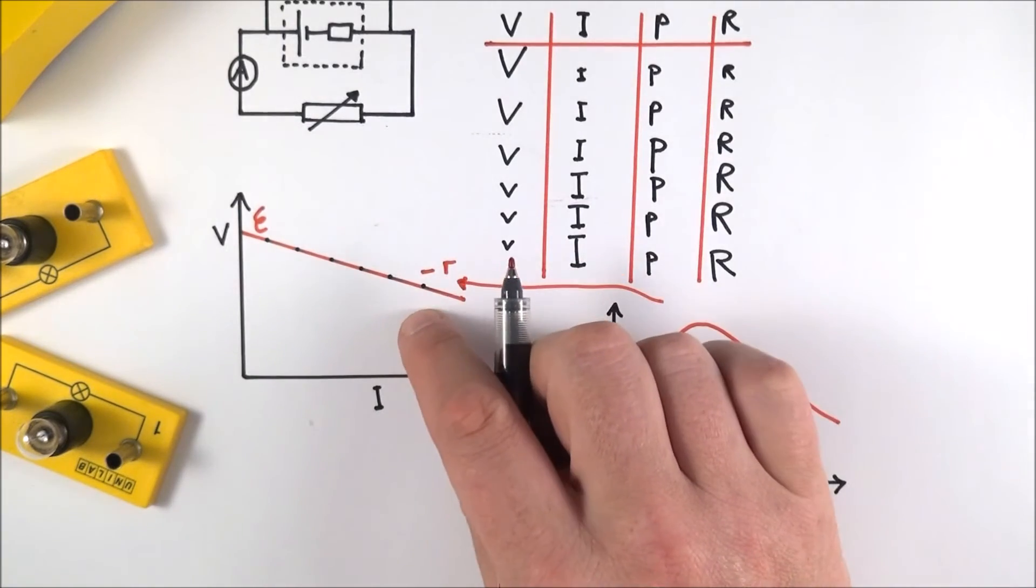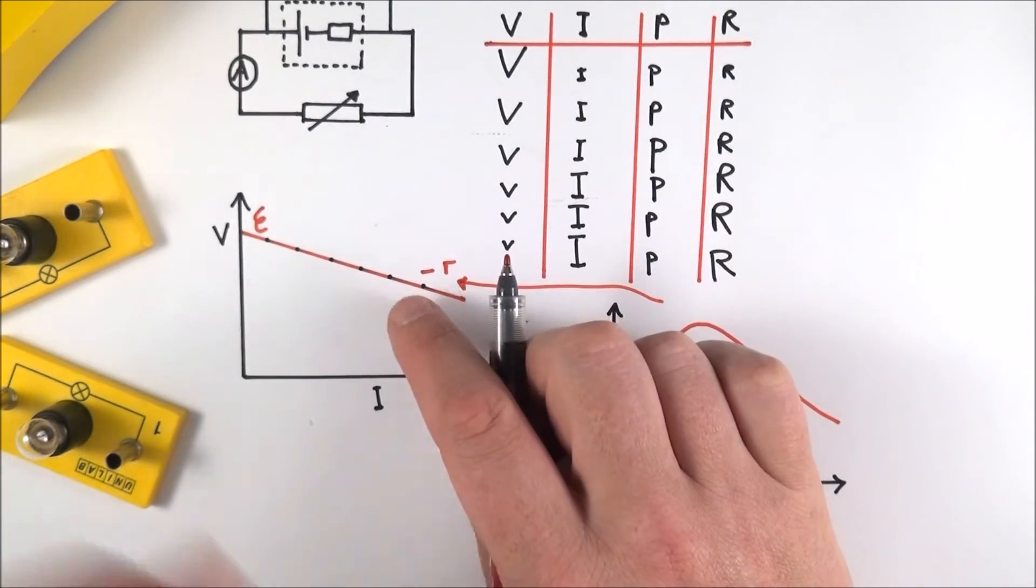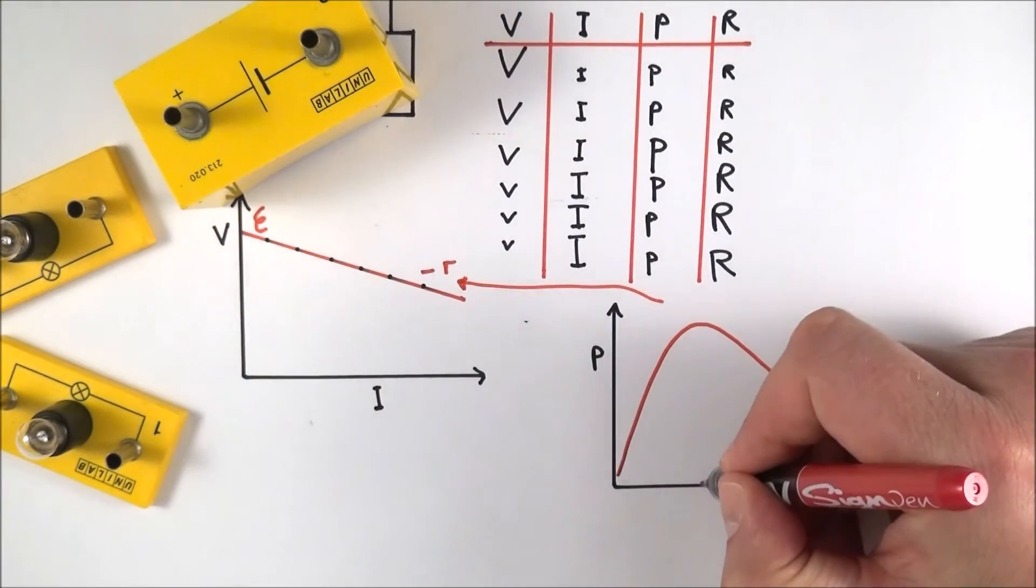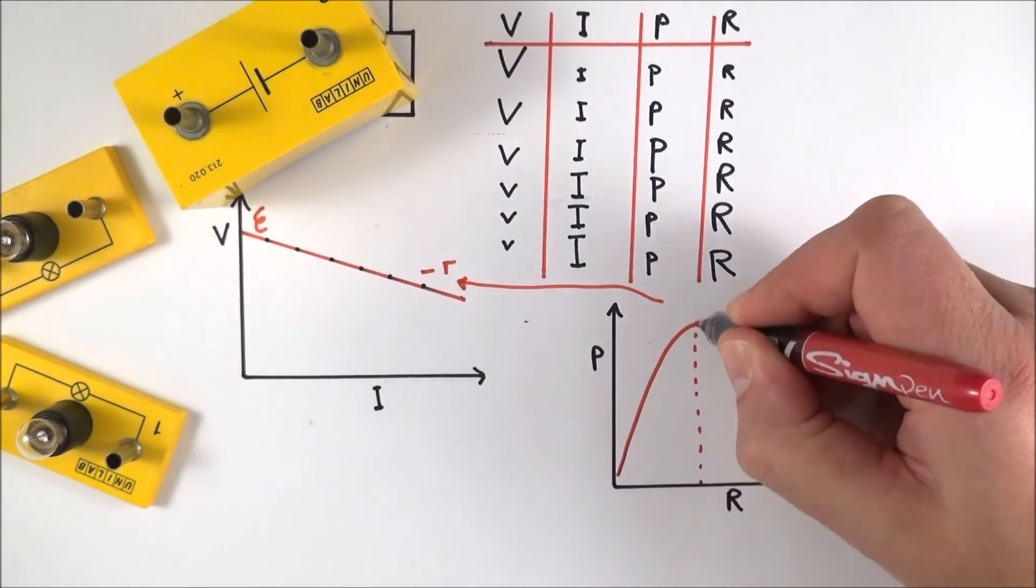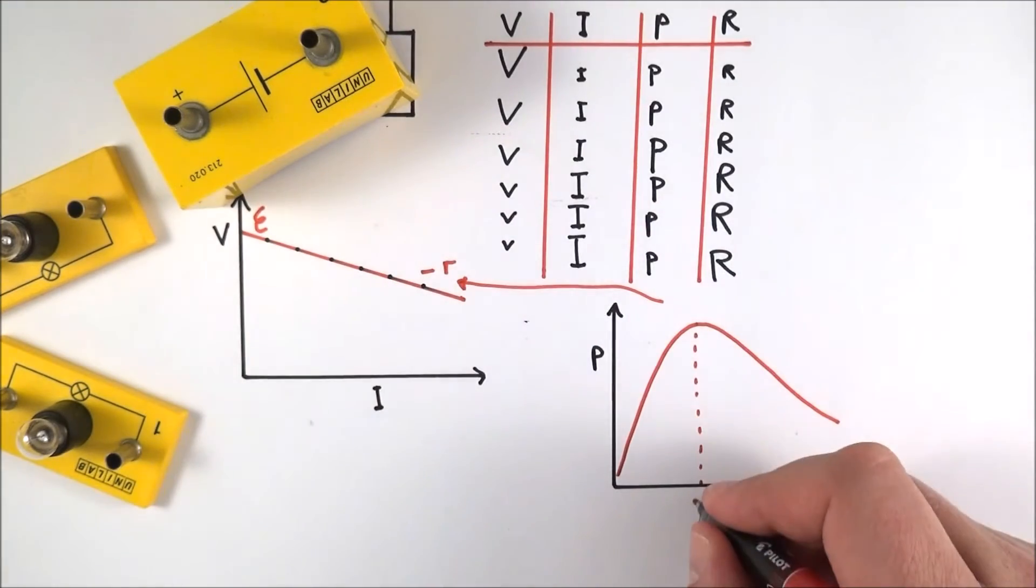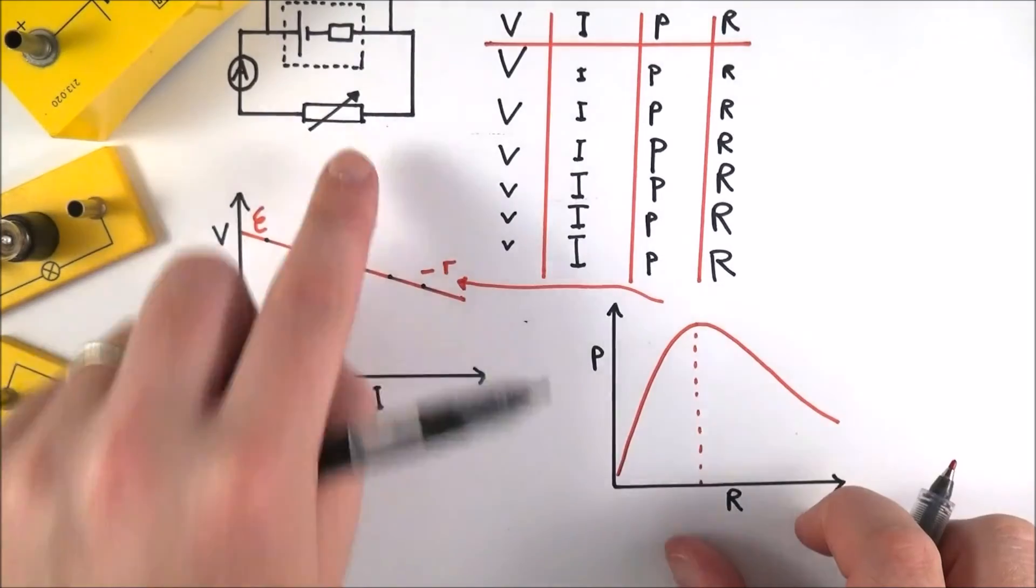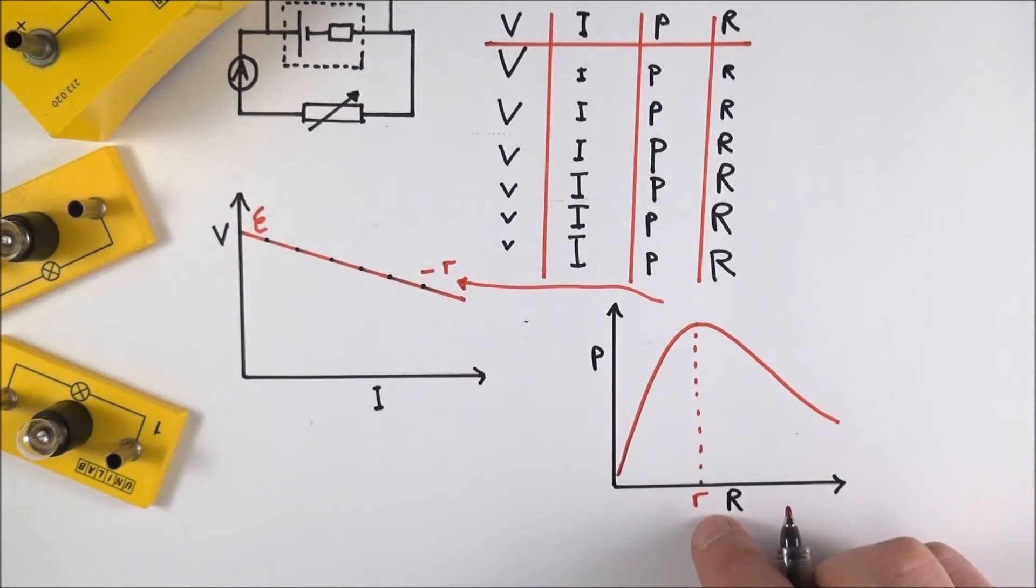With the first bit of data, you found your value for the internal resistance of the cell. What you might find is that your value of maximum power should be quite similar to where the resistance of the external part of the circuit is approximately equal to the value of the internal resistance.